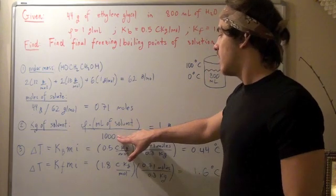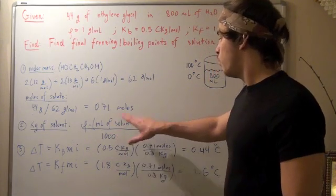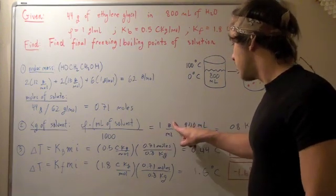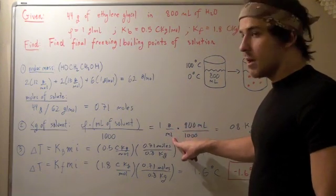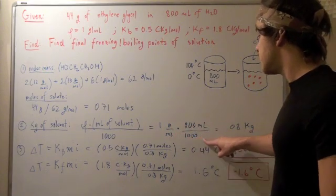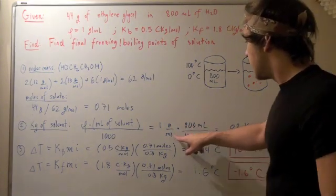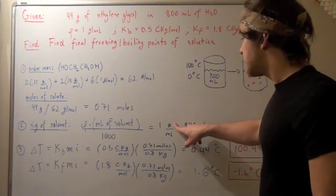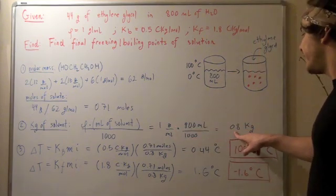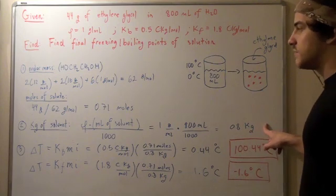Once again, 1,000, we divide by 1,000 because we want to go from grams to kilograms. So, 1 gram over ml, which is our density, times 800 ml over 1,000 gives us, the mls cancel, grams becomes kilogram because we're divided by 1,000, and that gets us 0.8 kilograms of solute.